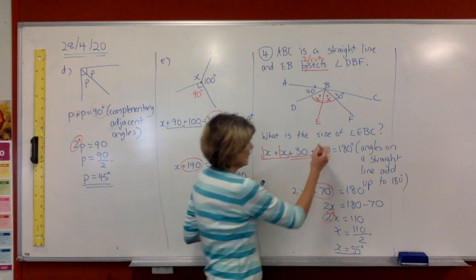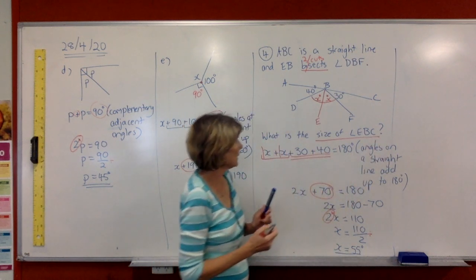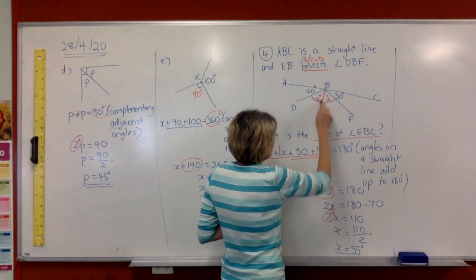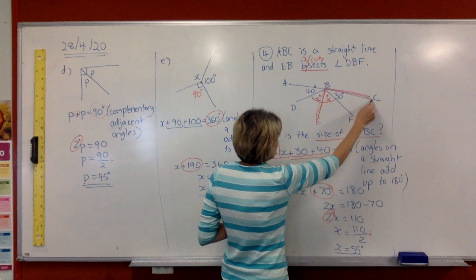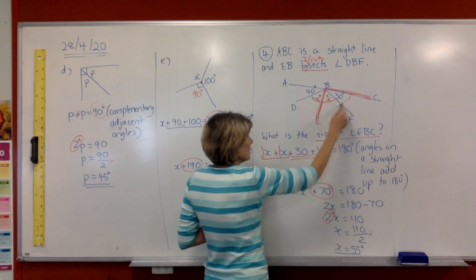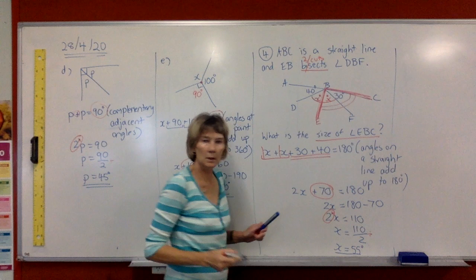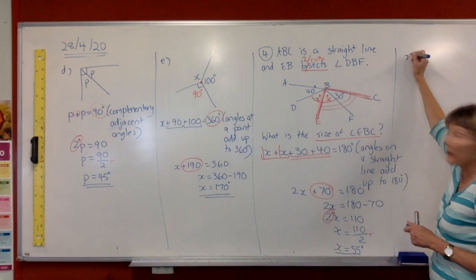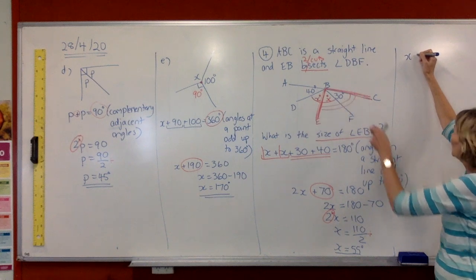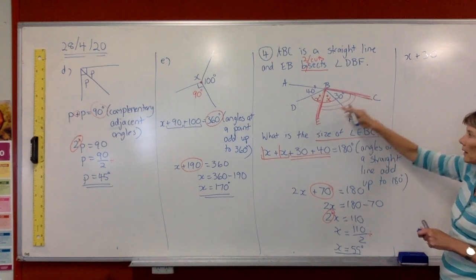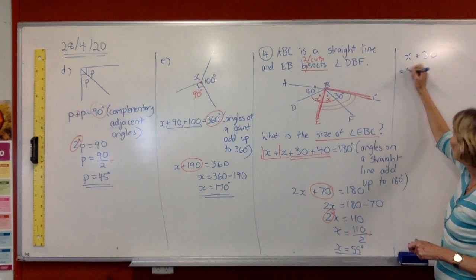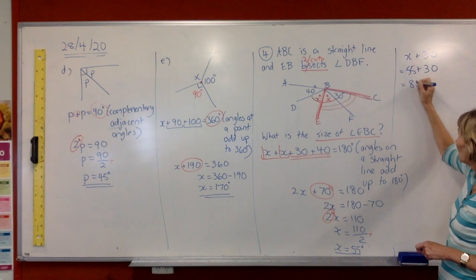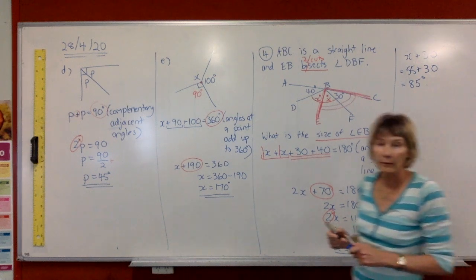All right, so the question says, what is the size of angle EBC? Well, EBC, EBC is all of this. So we have to find all of that. So it's easy now because we're just going to get X plus 30 and work that out. X is 55. We just found it. Plus 30. And we've got 85 degrees.